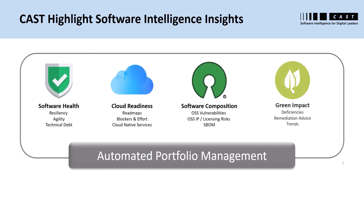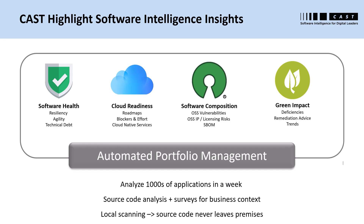CAST Highlight produces several types of software intelligence insights supporting various use cases. Software health insights include resiliency, agility, and technical debt, often used for application portfolio rationalization. Cloud readiness insights include roadmaps, migration blockers, effort estimates, and recommendations on cloud native services for faster, safer cloud migration. Software composition analysis insights include open source vulnerability risks, IP and licensing risks, and software bill of materials production. Green impact insights include green deficiencies in the code, remediation advice, and monitoring sustainability trends over time.